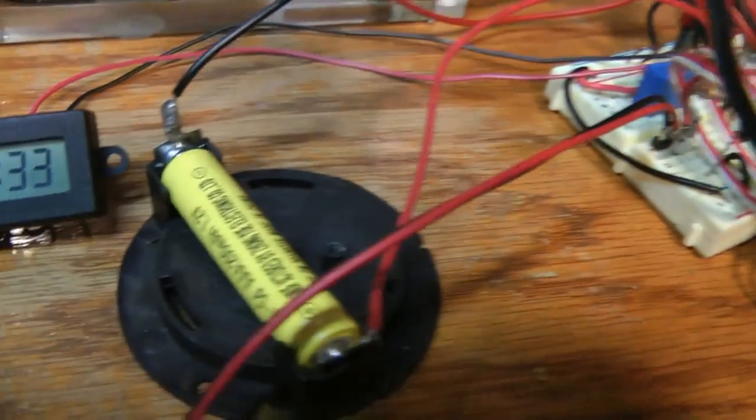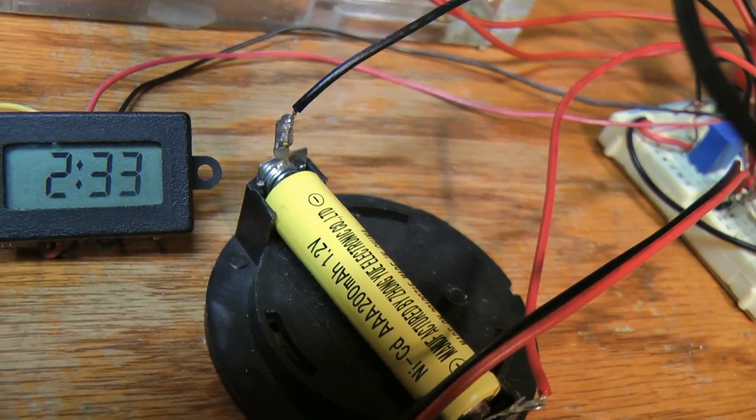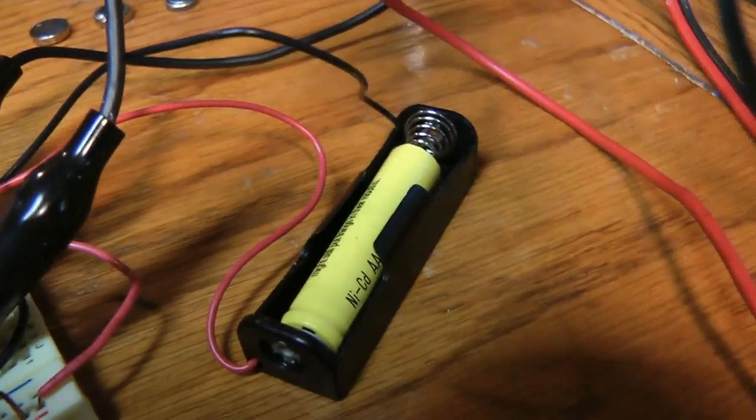I have the bridge going to another identical battery to the run battery. Now these are you can see AAA 200 milliamp. Same thing with this one.